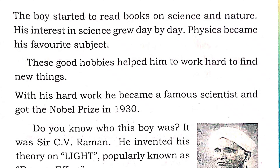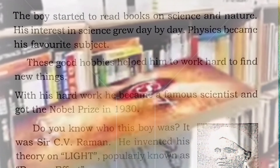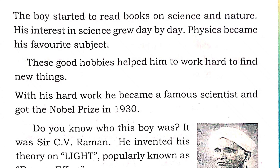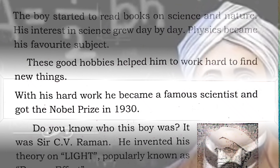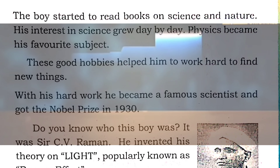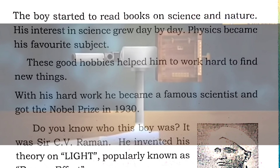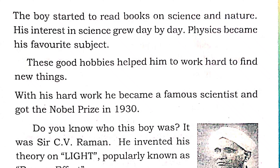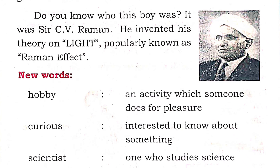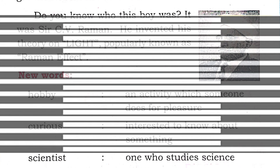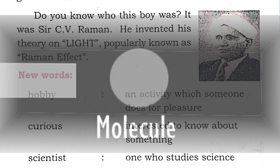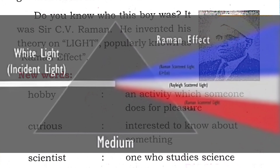The father also used to play on the veena and violin, and the boy enjoyed the sweet music. He was very intelligent and disciplined. All the teachers loved him and advised him to read good books. The boy started to read books on science and nature, and his interest in science grew day by day. Physics became his favourite subject. These good hobbies helped him work hard and find new things. With his hard work, he became a famous scientist and got the Nobel Prize in 1913. It was Sir C.V. Raman, who invented his theory — popularly known as the Raman Effect.